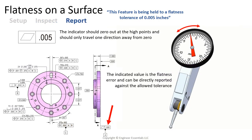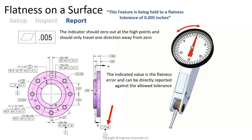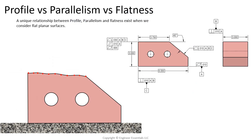The indicator should zero out at the high points and only travel one direction away from that zero. This value indicated on our test indicator is going to be directly reported against the allowed tolerance for this feature.